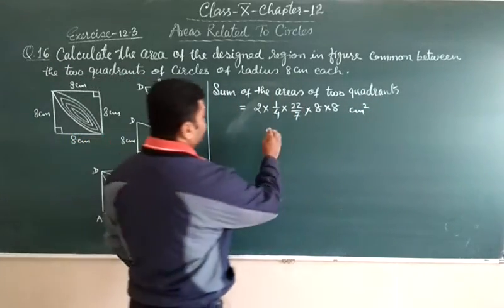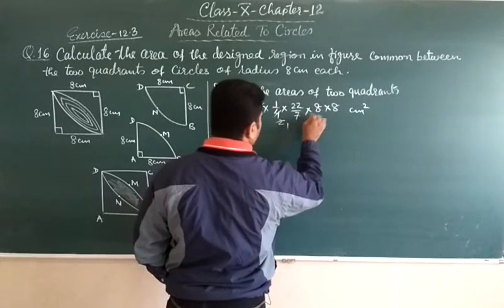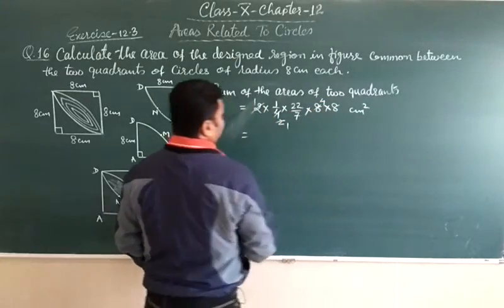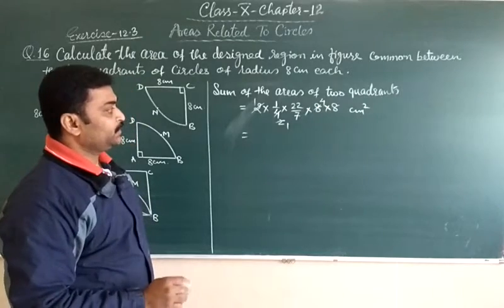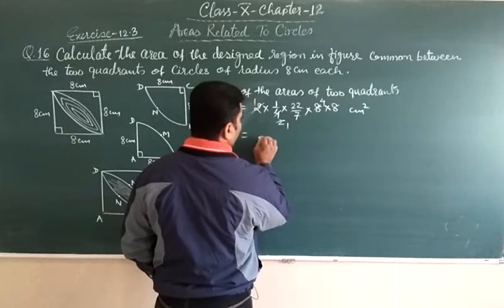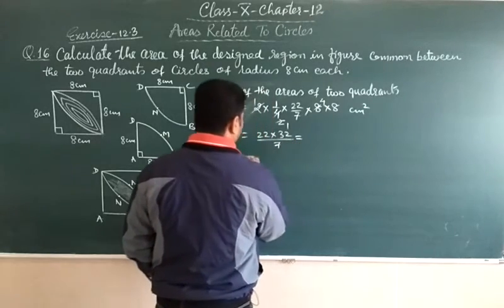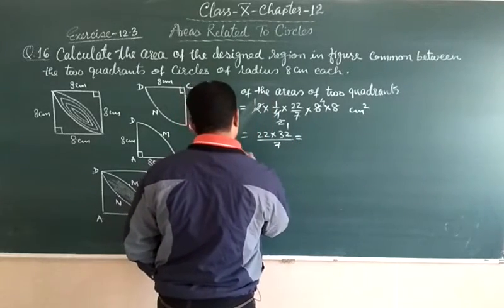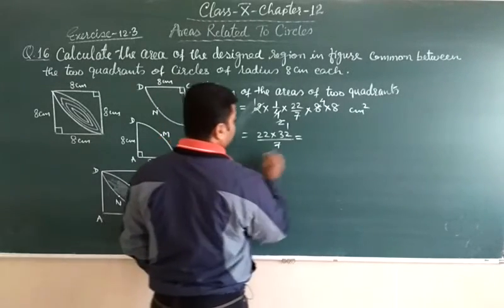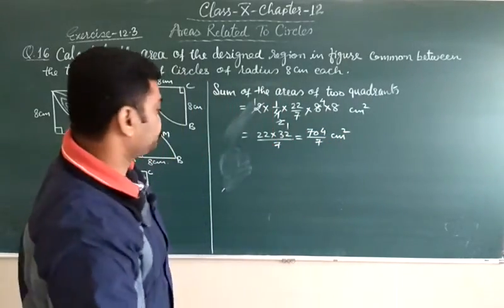So, if we cut from here, two ones are 2, two twos are 4, two ones are 2, four fours are 8, that is 22 into 4 into 8 upon 7. 22 into 4, means 22 into 32 upon 7, that is 32 into 22, 704, that is 704 upon 7 centimeter square.